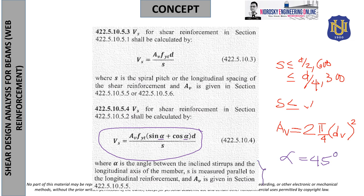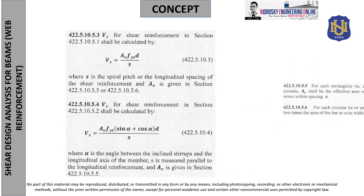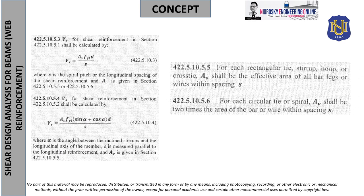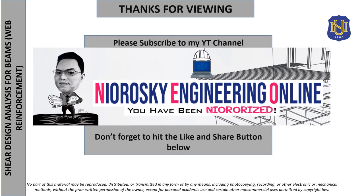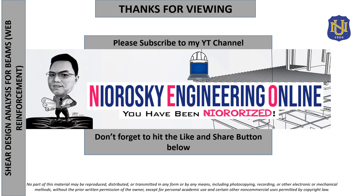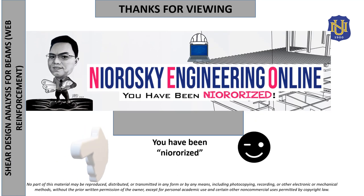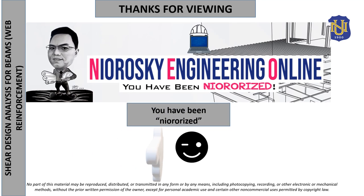Per code 422.5.10.5, for a rectangular tie, AV is the effective area of all wires or legs within spacing S. For 2-legged stirrups, it is multiplied by 2; for columns, there can be 3-legged or 4-legged arrangements. For beams, 2-legged is used as the minimum. In the next video tutorial, we will apply the NSCP codes to design and analyze shear for a beam. Thanks for viewing — please subscribe, like, and share.